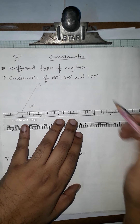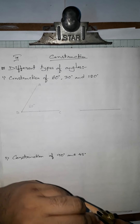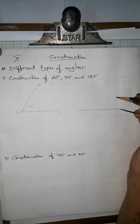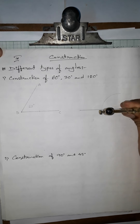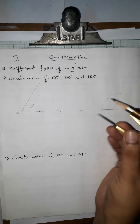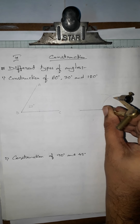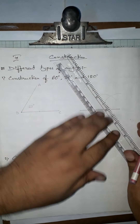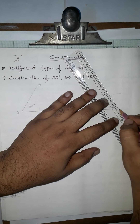So first we draw a 60-degree angle. We draw a base, then using any choice of radius we give an arc. We get the first intersection point, and without changing the radius, from that intersection point we give another arc — this gives us the point for 60 degrees. Joining gives angle ABC = 60 degrees.